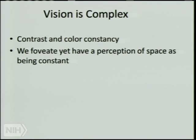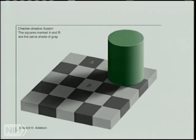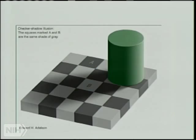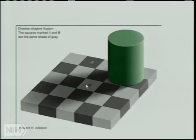Illusions can help us understand what's happening behind the scenes. Here's one by Adelson: square A and square B are the same shade of gray, though it doesn't look that way at all. If I cover everything, they really are the same shade. A is surrounded by white squares, B by black squares — and B is sitting in an area of shadow while A is in a bright area. Those two things change our expectations, and we end up seeing something different from reality.